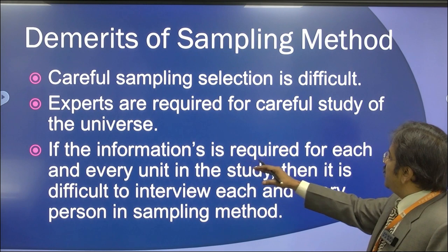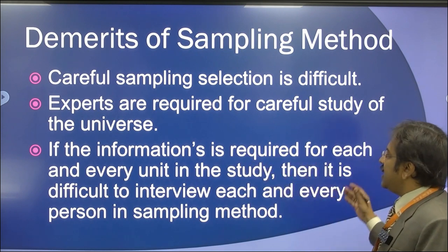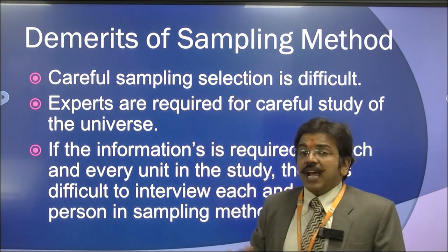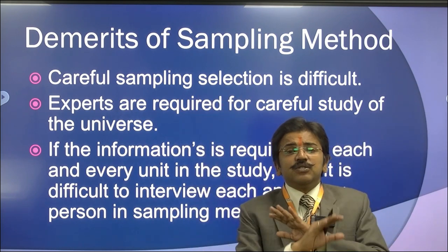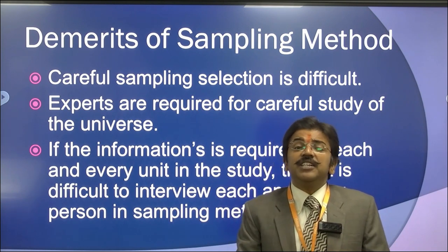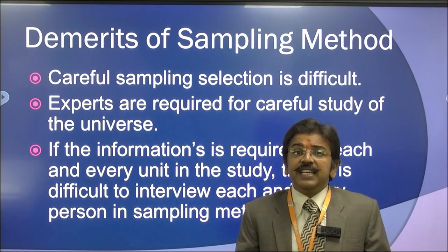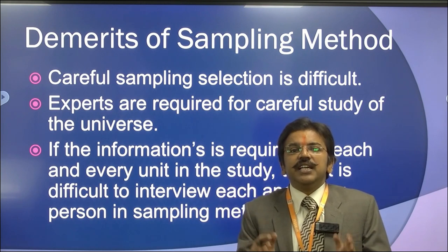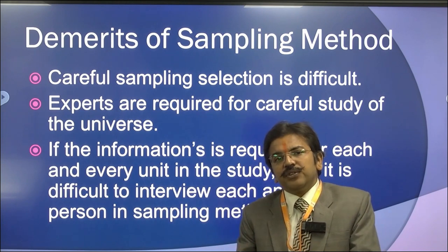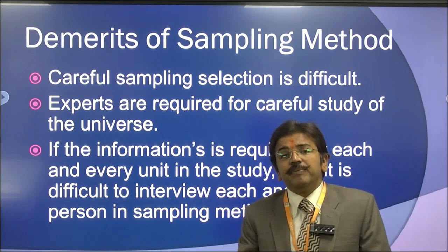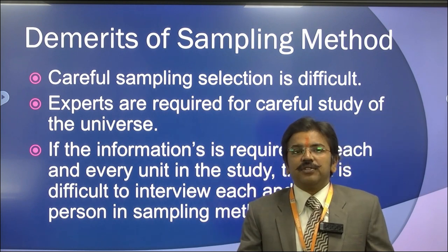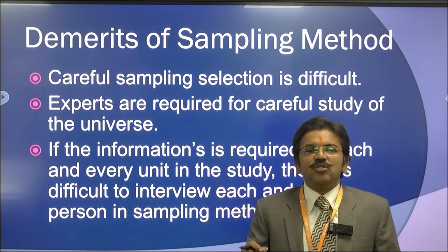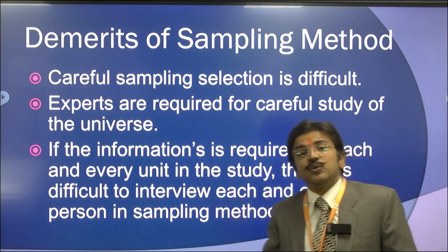The third demerit is that if information is required for each and every unit in the study, it is difficult to interview each and every person using the sampling method. If we apply sampling results to the entire census population, we cannot say these are the findings of each and every person. We can only assume that our sample represents the universe, but it may not give a fully accurate result of the entire universe.